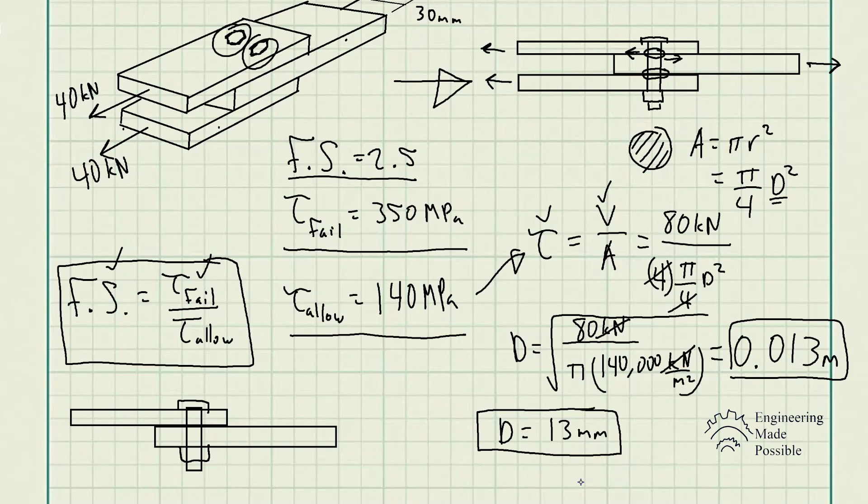If you're a little bit confused when it comes to the cross-sectional area, we can actually simplify the problem and have just two plates instead of the three plates that we had in the original problem statement, and let's just assume we have one bolt across the two plates here.